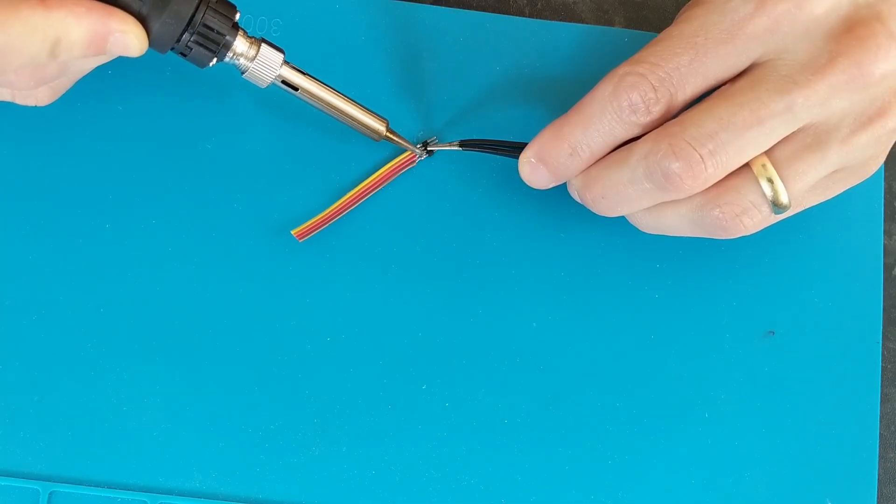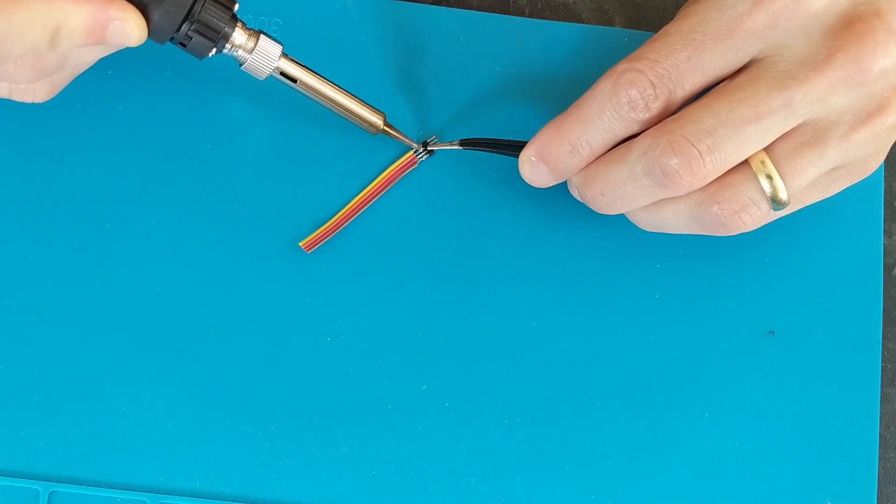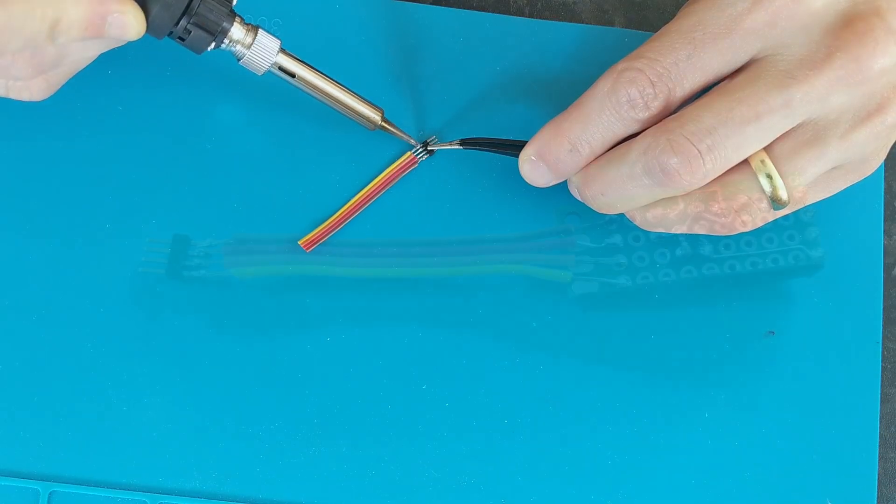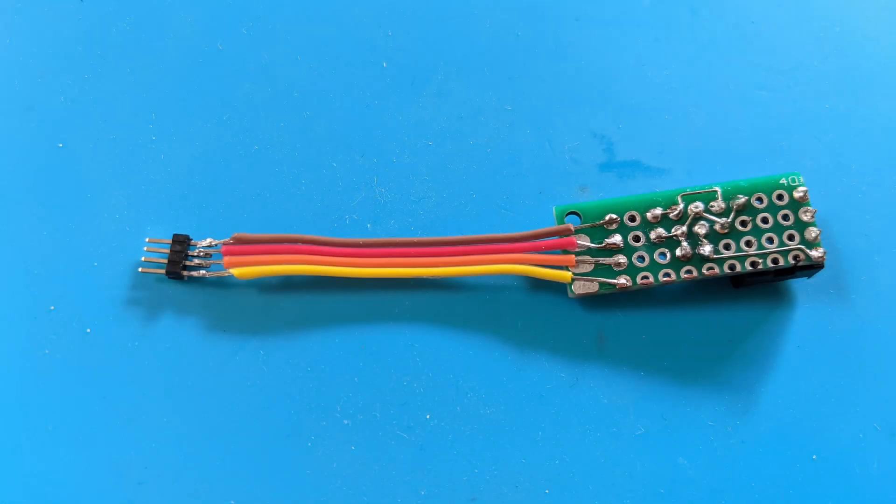The easiest way to make this board connect into the socket in the Voyager was to solder some ribbon wires to it, and solder those to some pins. Only four of the pins are needed, the two tracks and the red and white lights.